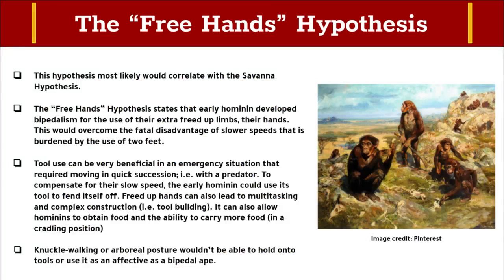Before we continue, this hypothesis most likely correlates with the Savannah Hypothesis. The Free Hands Hypothesis states that bipedality was adapted for the convenient use of freeing up the hands. The extra free limbs can be used for tools or for carrying. This new perk would overcome the new disadvantage of slow speed. Tool use can be very beneficial in an emergency situation requiring quick action, such as if a predator attacked — the early hominin could use a tool to fend itself off. Freed-up hands also allow for multitasking and complex construction like tool-building, and allow hominins to carry more food in a cradling position. A quadrupedal posture would not be able to hold or use a tool as efficiently as a bipedal individual.